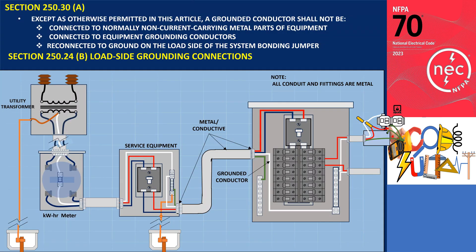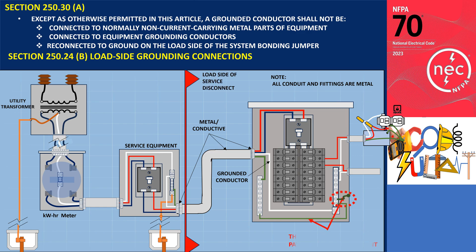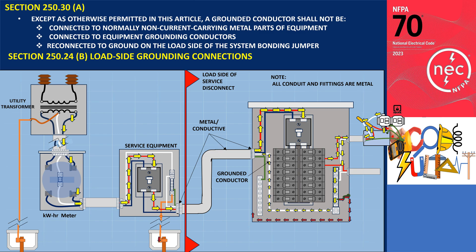This rule has been specified in section 250.24. This is not allowed because it introduces parallel paths for neutral current on the load side. When the grounded conductor, typically the neutral, is connected to the panel enclosure or any conductive metal components of electrical equipment at the load side of the service disconnect, it leads to the flow of neutral current into unintended paths such as metal piping, cable trays, cable sheaths, and similar pathways. This flow of neutral current is commonly referred to as an objectionable current. However, there is a section that allows the grounded conductor to be grounded again under specific conditions, which we will find out in the following sections.